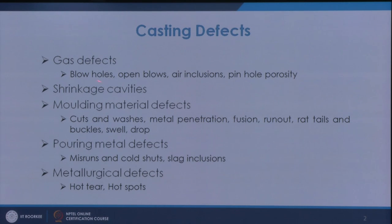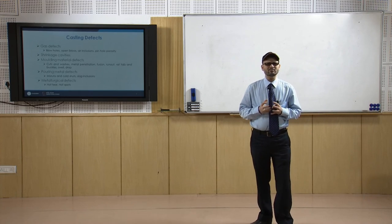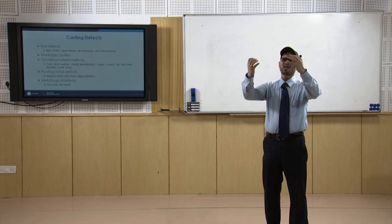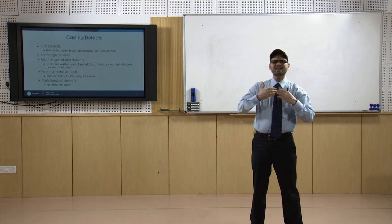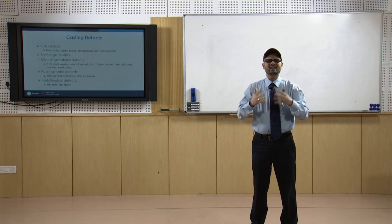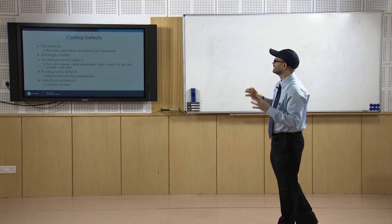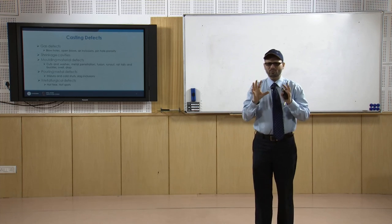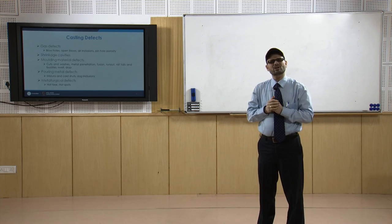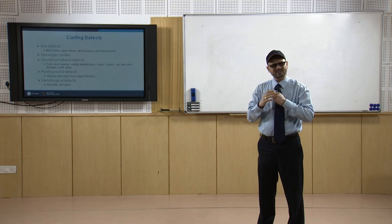Gas defects — blow holes or open blows — are basically because of the entrapment of gases inside the metal. When we are heating the material, at higher temperature the metal normally has a larger solubility of gases, so many gases tend to dissolve in larger amounts at higher temperature. When cooling, as temperature comes down, the solubility of these gases decreases drastically.